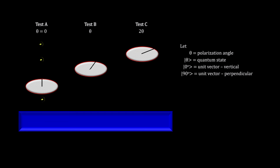Here we have three tests, A, B, and C. Test A sends vertically polarized photons into a vertically polarized filter. Test B sends vertically polarized photons into a filter polarized at an angle theta. And test C sends vertically polarized photons into a filter polarized at an angle 2 theta. Now the object of the exercise is to examine the role of Einstein's entangled particle hidden variables hypothesis.